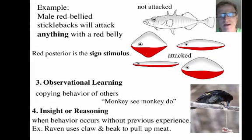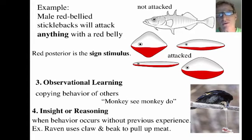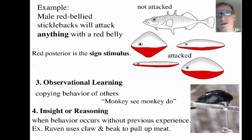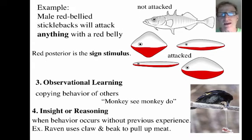Insight or reasoning is when you learn things without having ever seen them and come up with the behavior yourself. The famous example is the ravens — meat was placed on a string below them where they couldn't reach it with their beak. They had to reason that if they pulled on the string and held it with their claw, they could pull it up bit by bit using beak and claw. This is insight: they figured it out themselves without having seen it done.